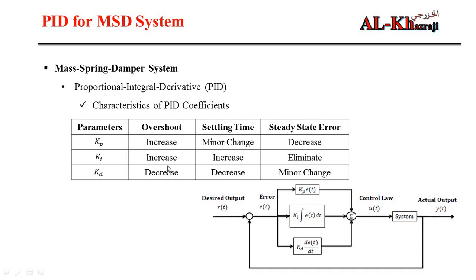The basic characteristics of each component are as follows. Kp increases the overshoot but decreases the steady-state error with little change in settling time. Ki increases the overshoot and settling time but eliminates the steady-state error. Kd decreases the overshoot and settling time but has little effect on steady-state error.